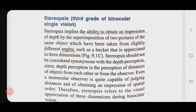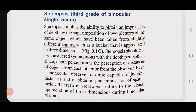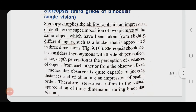Now I will talk about the third grade of binocular single vision — that is stereopsis. We have all seen 3D movies; it looks very exciting — you see objects moving closer towards you, it is a thrilling experience. Stereopsis implies the ability to obtain an impression of depth by superimposition of two pictures of the same object which have been taken from slightly different angles. It is the depth perception by superimposition of two pictures of the same object taken from slightly different angles.